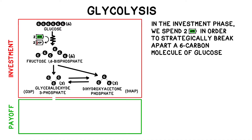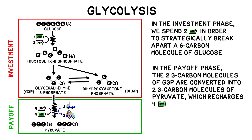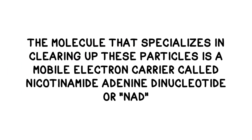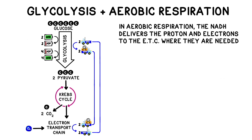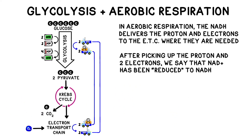In the payoff phase of glycolysis, the three-carbon G3P molecules are converted into two three-carbon molecules of pyruvate. This series of reactions recharges four molecules of ATP, giving us an overall net yield of two ATP — we invested two and then created four. This second series of reactions also generates waste products of protons and electrons. The molecule that specializes in clearing up these particles is a mobile electron carrier called nicotinamide adenine dinucleotide, or NAD. The NAD+ version picks up a proton and two electrons and delivers them to wherever they're needed, often the electron transport chain in aerobic respiration — a lot like a dump truck. After it's picked up a proton and two electrons, we say that NAD+ has been reduced into NADH.